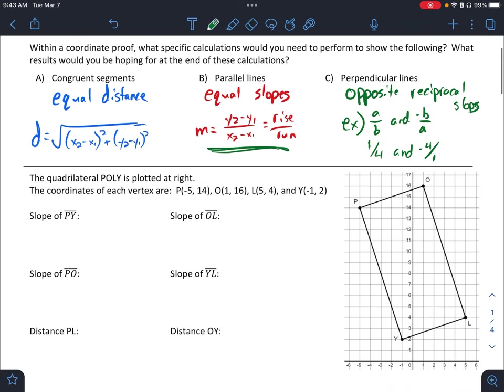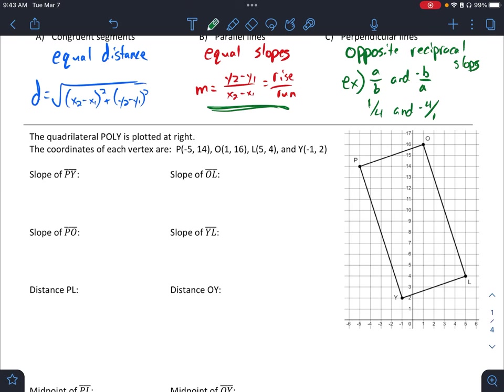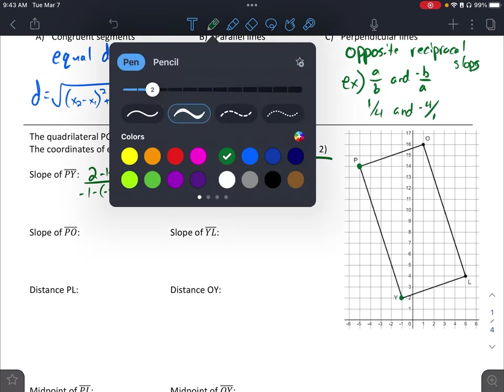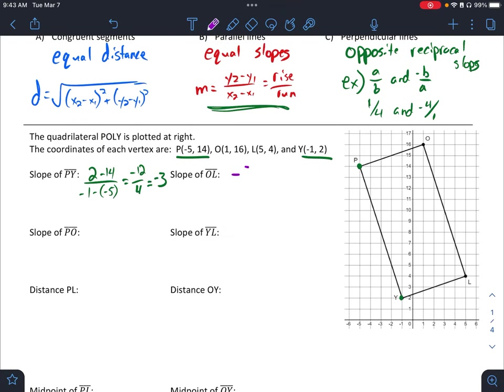So then we use these to be able to find different things. So if I look for the slope of PY, I'm looking at this point and this point, using my slope formula with P and Y, I get two minus 14 over negative one minus negative five, careful with negatives, and we get negative 12 over four, which is negative three.